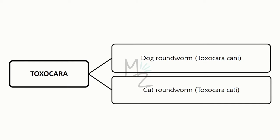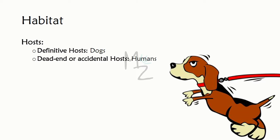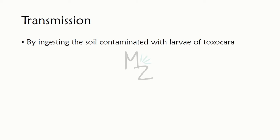Toxocara is classified into two: the dog roundworm Toxocara canis and the cat roundworm Toxocara cati. The definitive hosts are dogs, while the dead-end or accidental hosts are human beings. A dead-end host accidentally gets the infection but is not responsible for further transmitting it — the infection ends in that host.